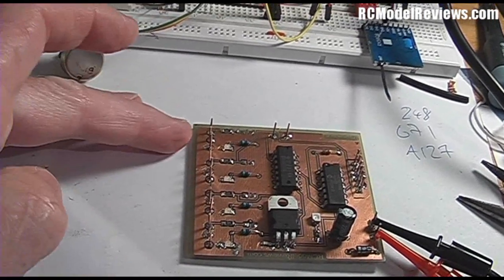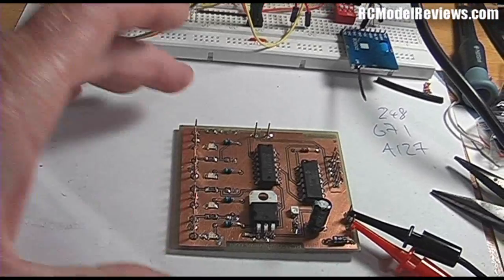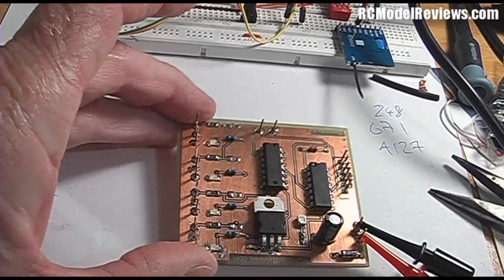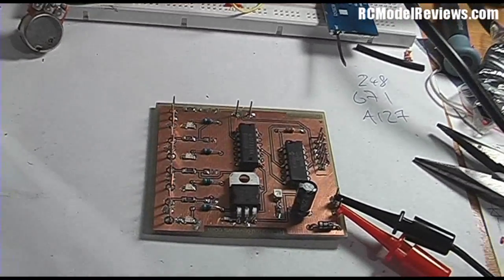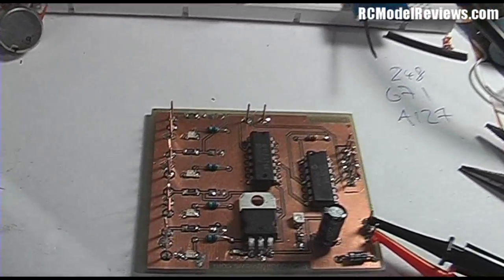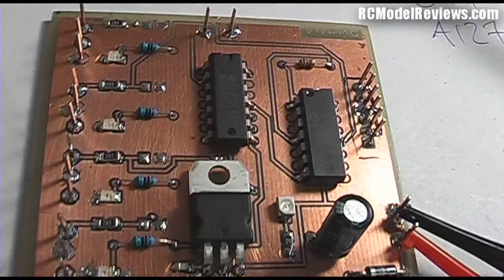It actually switches between any one of four antennas or four receivers based on which one has the most signal at any given time. That means you can have your omni-directional and your patch and your helical, whatever you want. As you can see, I'll get a bit close up here.